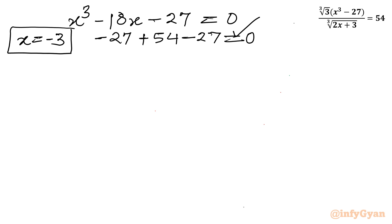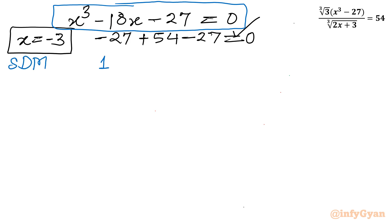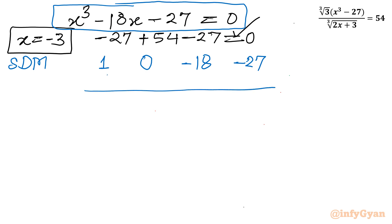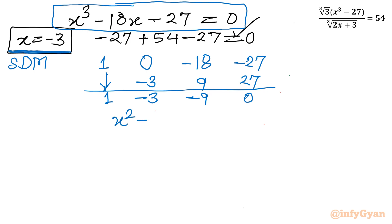Using synthetic division with root -3 and coefficients 1, 0, -18, -27: bring down 1; -3 × 1 = -3; 0 + (-3) = -3; -3 × (-3) = 9; -18 + 9 = -9; -3 × (-9) = 27; -27 + 27 = 0. This gives the quadratic x² - 3x - 9 = 0.